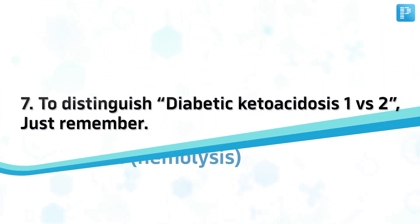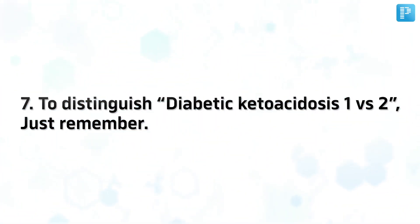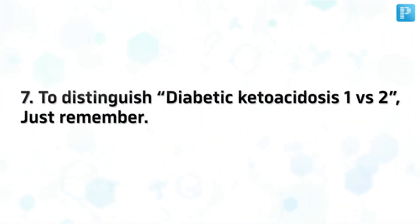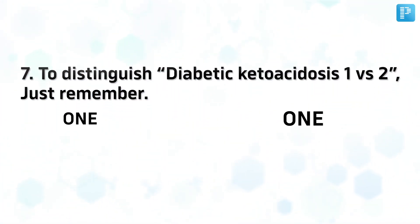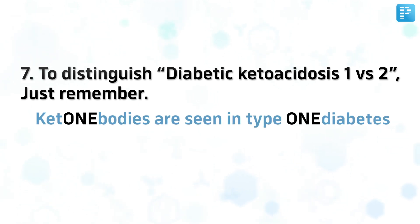Number 7. To distinguish diabetic ketoacidosis type 1 versus type 2, just remember that ketone bodies are seen in type 1 diabetes.